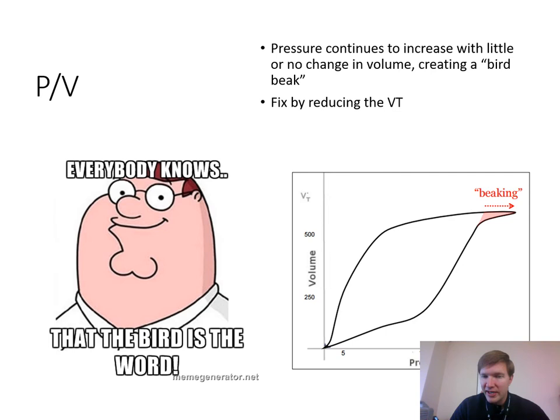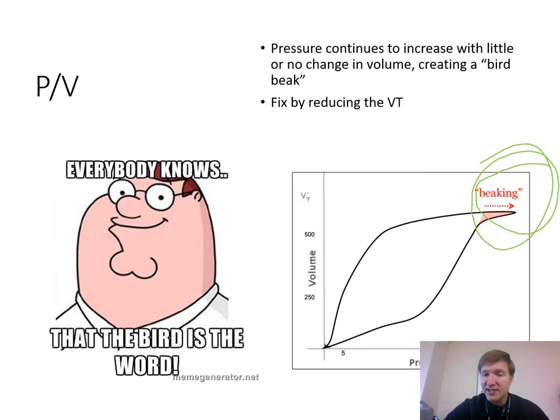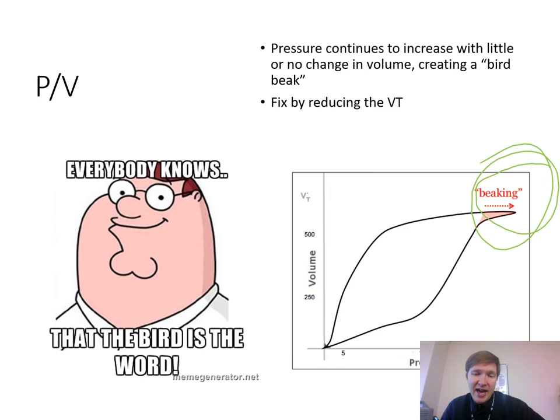One of the most important findings — and this was on the boards frequently — is beaking. Pressure continues to increase with little or no change in volume, creating a little bird beak on the PV loop. This means there's alveolar over-distension, which could indicate barotrauma and/or volutrauma: high pressure for no volume change. The fix for beaking is reducing the tidal volume.